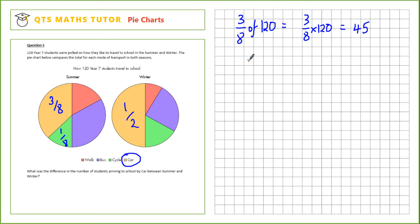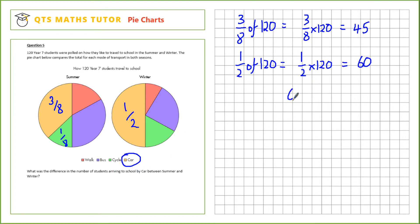Let's do the same for winter. A half of 120 is 60. The question asks what was the difference in the number of students — that's 60 takeaway 45, which gives us an answer of 15 students.